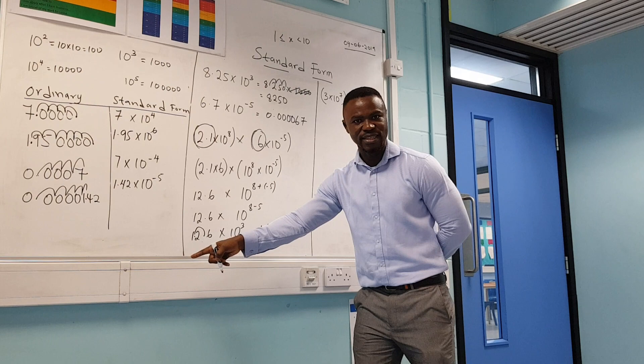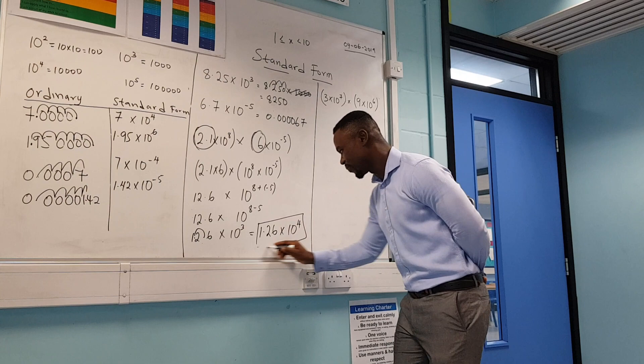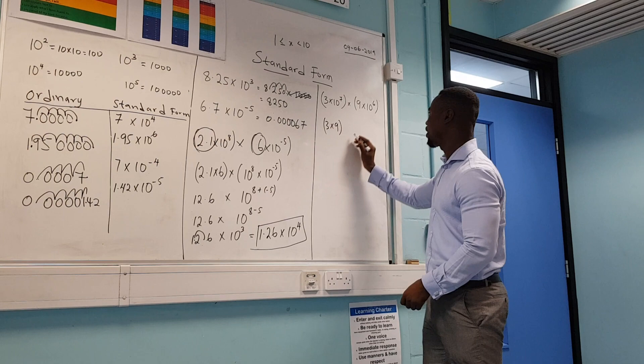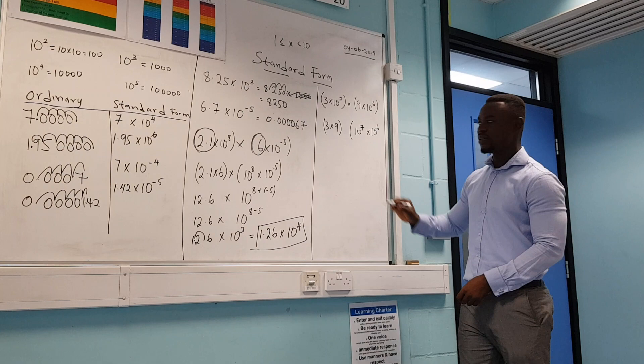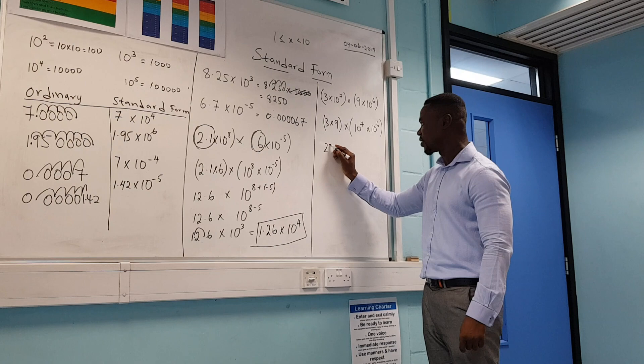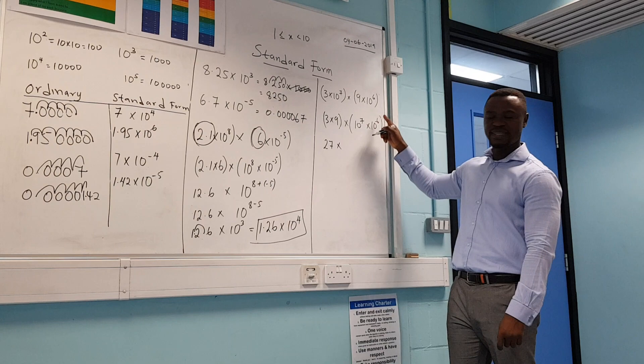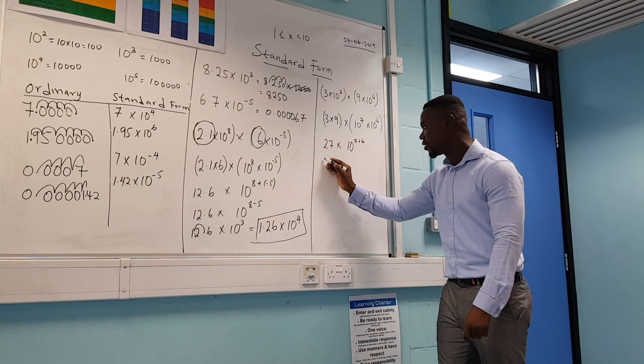Let's quickly do another example with the same process. Group them: 3 times 9 in one bracket, then 10 to the power of 7 times 10 to the power of 6 in another bracket, with a multiply sign in the middle. 9 times 3 is 27. Using the law of indices, we add the powers: 7 plus 6 is 13. So we have 27 times 10 to the power of 13.